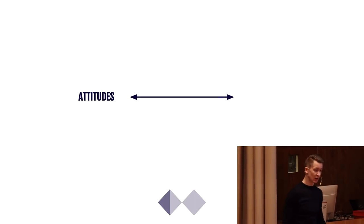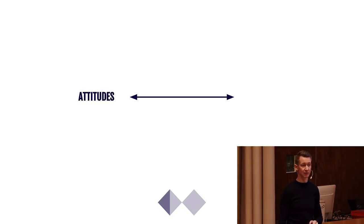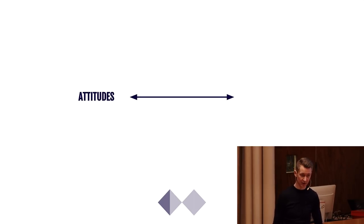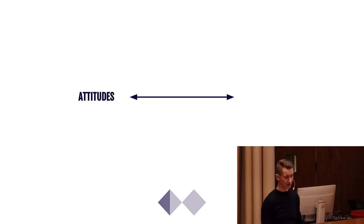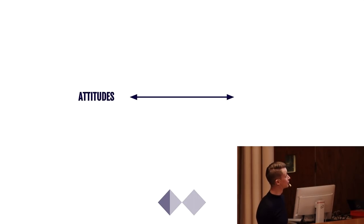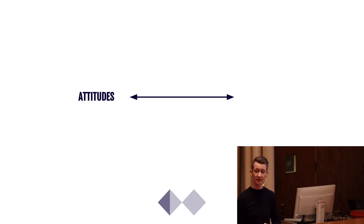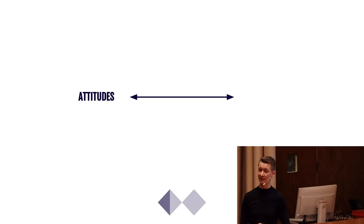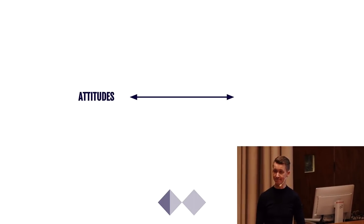Now I'll go through step by step what you need to do in each of the four stages. We start with the first one: finding the actual need. For that we introduce one axis — on one end we have attitudes, or what people say, and that's a very different thing from what people actually do, or behaviors.